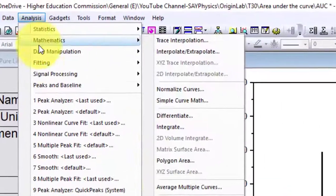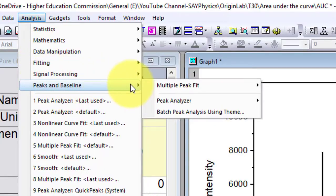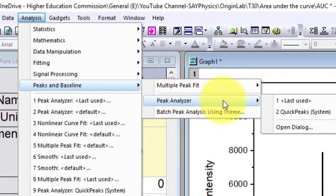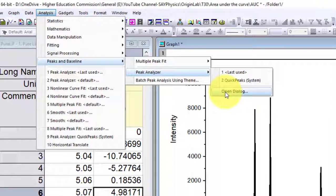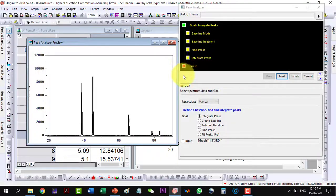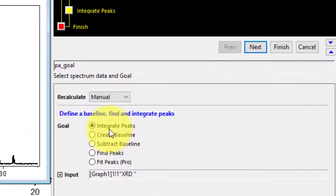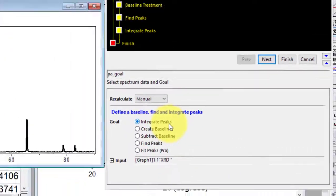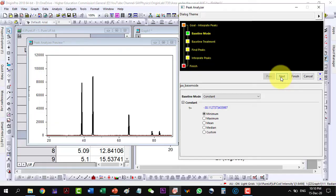Analysis, and then Peaks and Baseline, and to the Peak Analyzer, and I will open the dialog. As I open the dialog, then a preview opens here which will give me indications as I go on with this menu. Now I am doing the Integrate Peaks, so I will click Next. And here, the baseline mode, so the red line is shown here. It is the baseline.